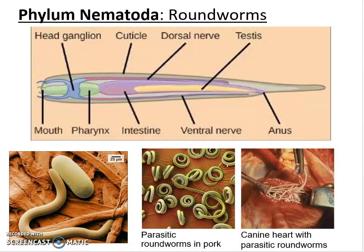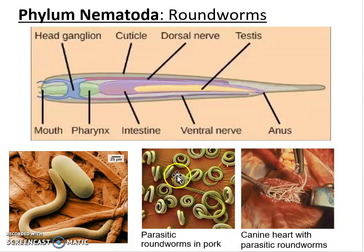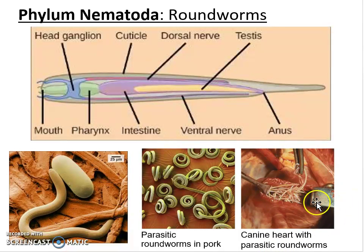In phylum Nematoda, many of these are decomposers, helping to recycle organic waste — you'd find a lot of roundworms in soil, though we don't see them. Many can also be parasites of both plants and animals. For example, parasitic roundworms found in pork can cause trichinellosis if the pork isn't cooked thoroughly, as juvenile worms live inside the pig's muscles. You can also see an example of a dog heart infected with parasitic roundworms living inside the bloodstream.